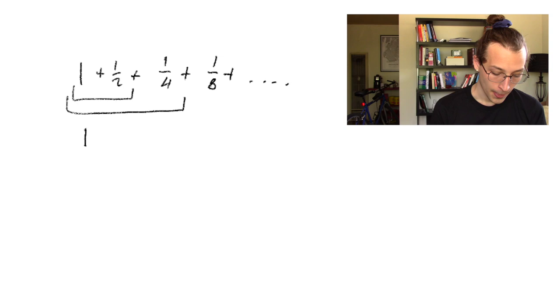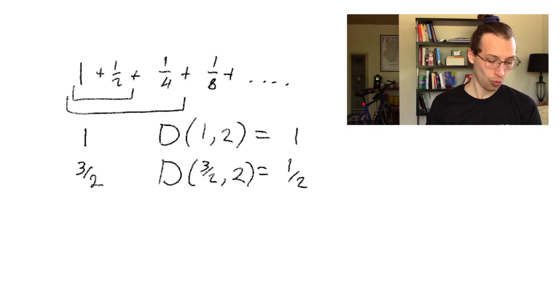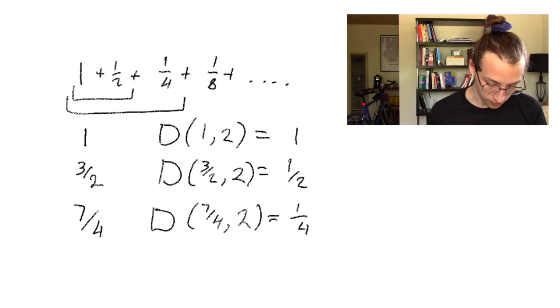Our next truncated sum is just 1 plus 1 half, so 3 halves, and the distance from 3 halves to 2 is just 1 half. Our next truncated sum is just 1 plus 1 half plus 1 fourth, so that's just 7 fourths, and the distance from 7 fourths to 2 is just 1 quarter. We can see that as we continue this process, the distance from each of our truncated sums to 2 is going down by decreasing powers of 2 to the n. And because this is the way in which we're approaching 2, we know that eventually we'll converge on 2.